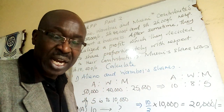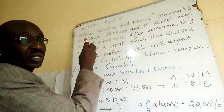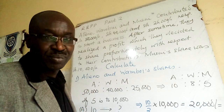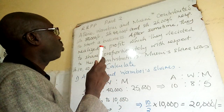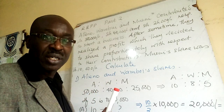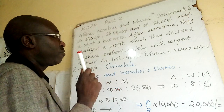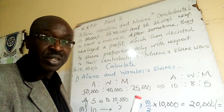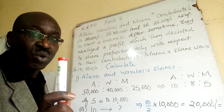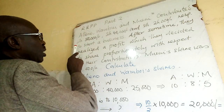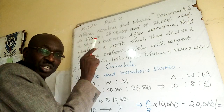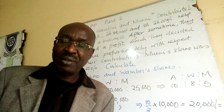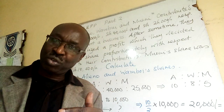Atieno, Wamboi and Mueni contributed 50,000, 40,000 and 25,000 respectively. The intention of this contribution is to start a business.